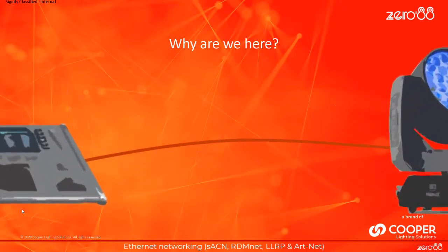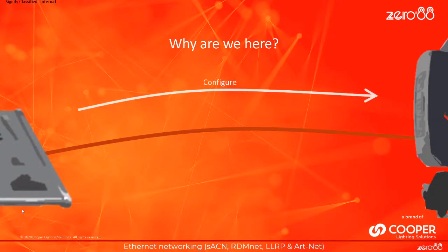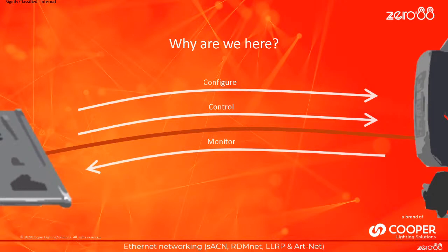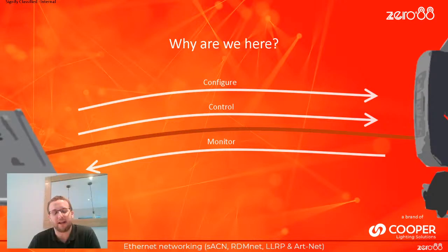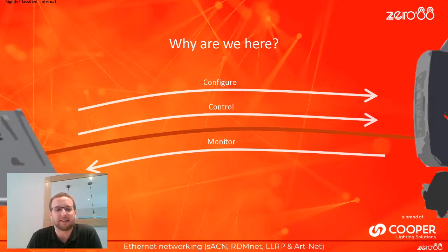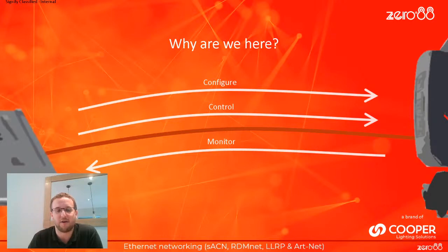We want to look at this cable and down it, we want to do three things: we want to be able to configure our lights, we want to be able to control them, and we want to be able to monitor them — to see what is going on. In the previous session, we looked at how we can do these three things using DMX and remote device management.